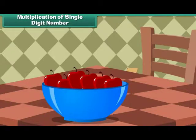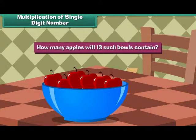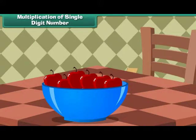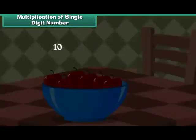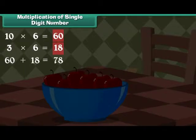Multiplication of single-digit number. 1 fruit bowl contains 6 apples. How many apples will 13 such bowls contain? We must multiply 13 and 6 to find the answer. Write 13 as 10 plus 3. Multiply 10 and 6. Then multiply 3 and 6. Sum the results up. 10 multiplied by 6 is equal to 60. 3 multiplied by 6 is equal to 18. 60 plus 18 is equal to 78. 13 bowls will contain 78 fruits.